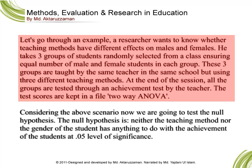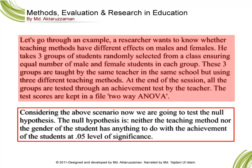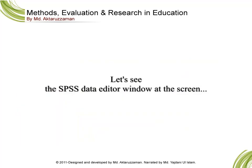At the end of the session, all groups are tested through an achievement test by the teacher. The test scores are kept in a file named 'two-way ANOVA'. The null hypothesis is: neither the teaching method nor the gender of the student has anything to do with the achievement of the students, at the 0.05 level of significance.